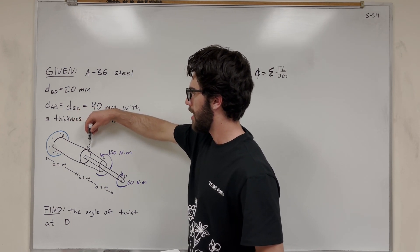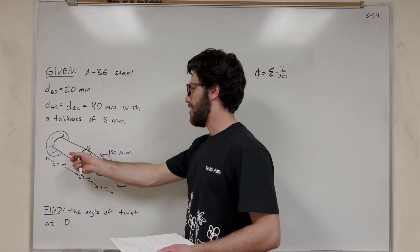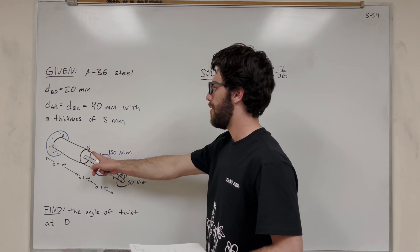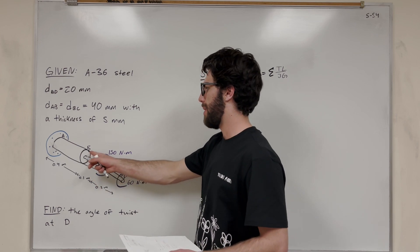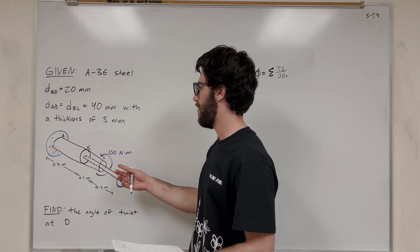Well, A to B is connected to D, so if AB gets twisted, then so is D. So we need to consider the twist of AB. And then if we look from BC, well BC, if you twist BC, that's not going to make a difference on how much D gets twisted. So that's not going to be part of it.